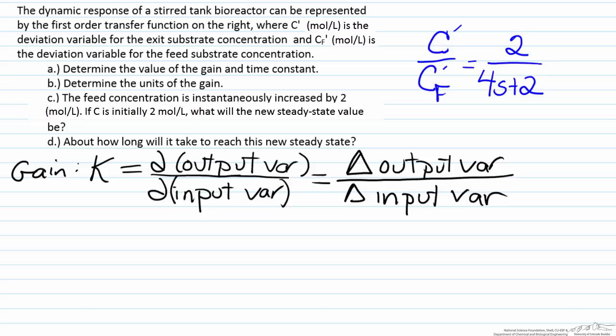So for example, if a gain is 6, what that would represent is the fact that if I change my input variable by one unit, that will cause at steady state, once the process reaches that steady state, a change of 6 units in the output variable.